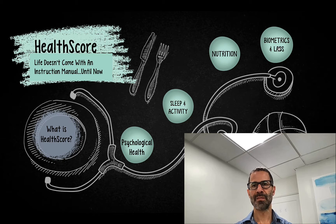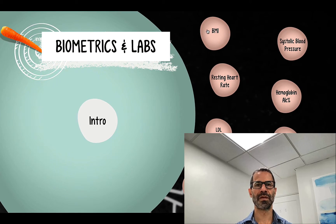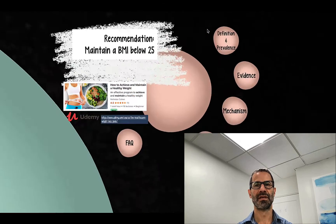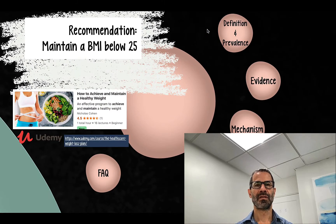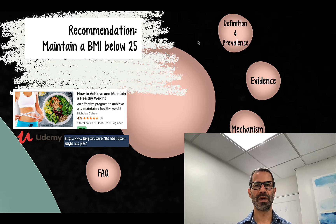Today we're in the biometrics and lab section of HealthScore, focused on body mass index. The recommendation is to maintain a body mass index below 25.